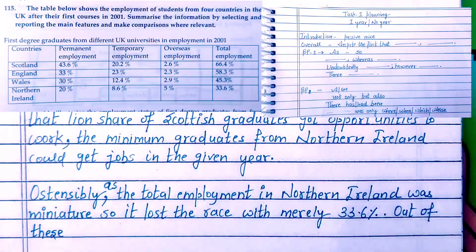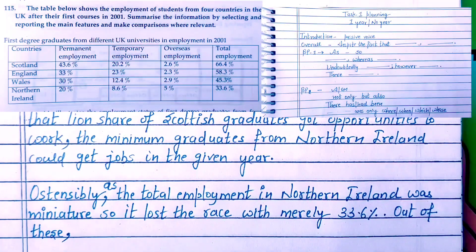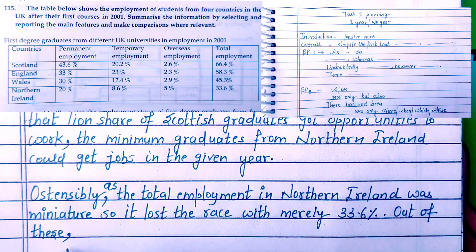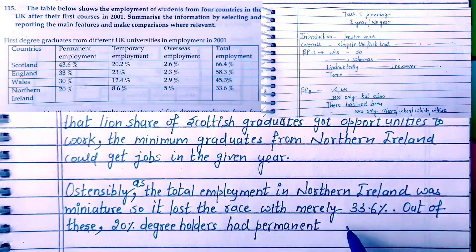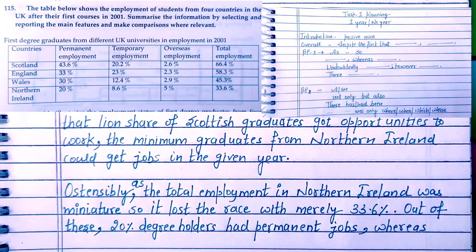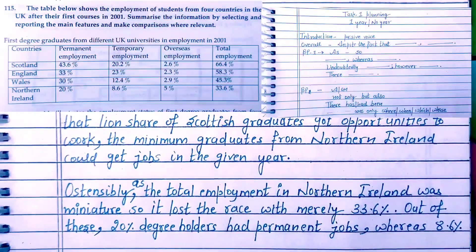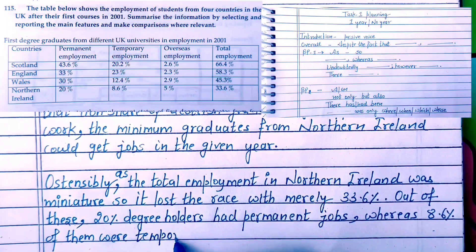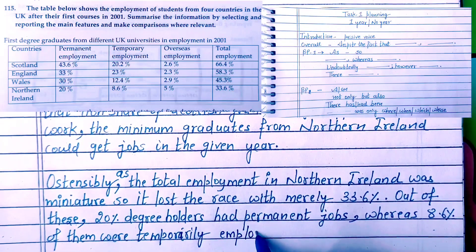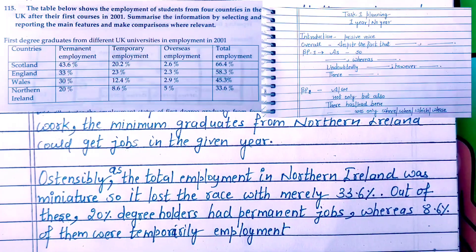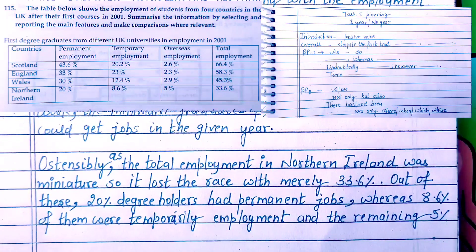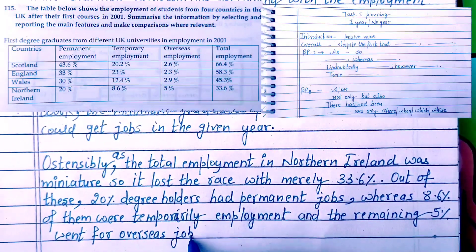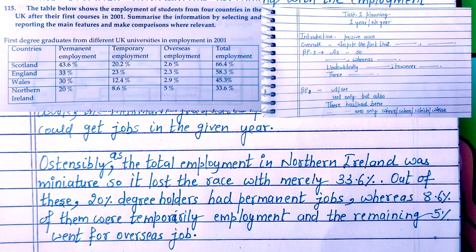Next, I'm going to explain Northern Ireland further — out of the total employment, who had permanent, who had temporary, and who had overseas jobs — by using the 'whereas' sentence structure. Out of them, 20% degree holders had permanent jobs, whereas 8.6% of them were in temporary employment. And the remaining 5% went for overseas jobs. That's how I completed Northern Ireland using the 'as and so' sentence structure along with 'whereas'.